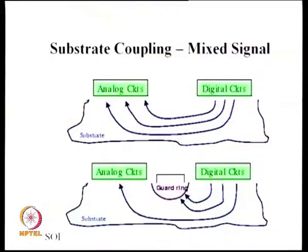In SOI (silicon on insulator) substrates, the digital block and analog block are shown separately, but they are connected through the substrate — called substrate coupling. Additional processing called guard ring technology is required, including deep pillar structures, to separate digital from analog and reduce noise coupling.